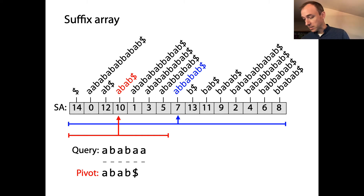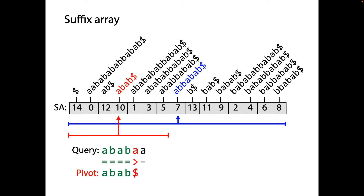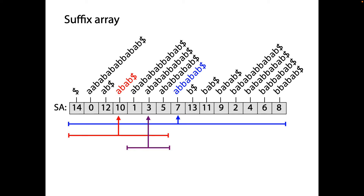We're going to lexicographically compare, and this time we see match, match, match, match, then a mismatch with the query character being greater than the character in the pivot. So we learned that the query is greater than the red pivot, meaning we're going to recurse to the right next. But we also learned that the query and the red pivot have a common prefix of length 4 — a common prefix of ABAB. In other words, the LCP is 4. So far we've done the exact same things as the usual binary search algorithm, but we're going to remember these two LCPs because in the next step we can actually use them.